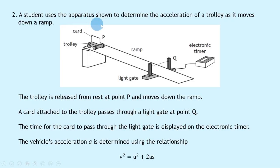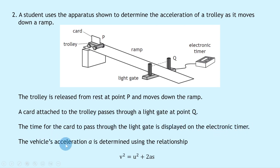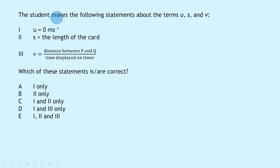Question 2: A student uses apparatus to determine the acceleration of a trolley moving down a ramp. A card on the trolley passes through a light gate at point Q. The time for the card to pass is displayed on the electronic timer. The acceleration is determined using v² = u² + 2as. The student makes three statements: U = 0 m/s; S equals the length of the card; and V equals the distance between P and Q divided by the time displayed.